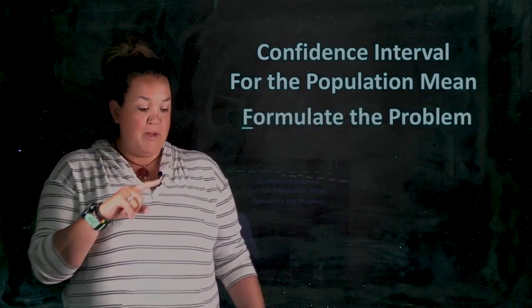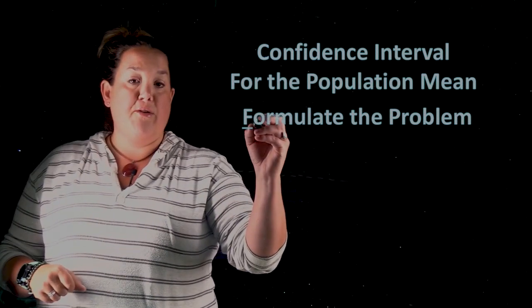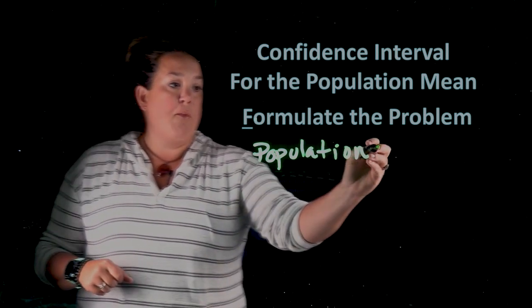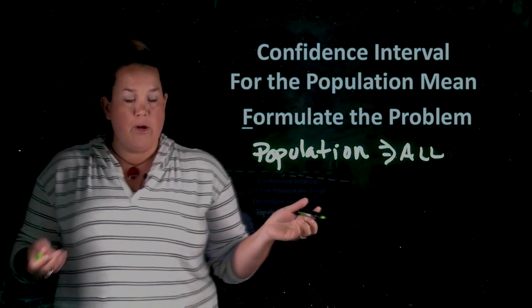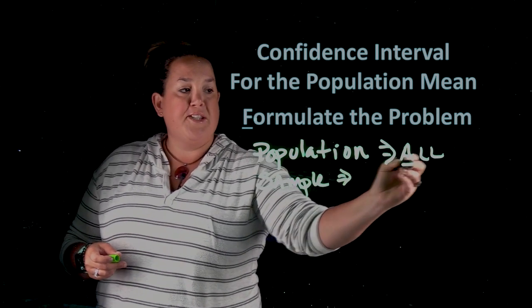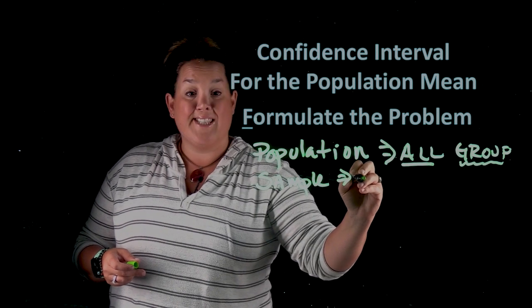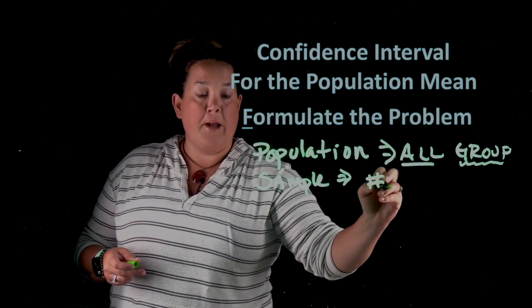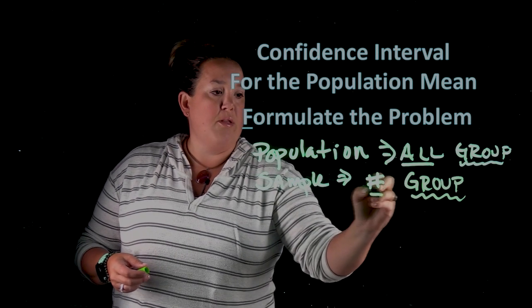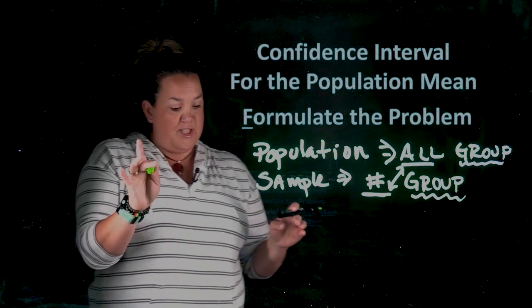For a confidence interval for the population mean, we're going to start by formulating the problem. That requires you to state first what the population is — the whole or entire group that you're interested in. Then you would state the sample, which will be the same type of group, but here with the sample you'll say the size — how many people, trees, or whatever it is you're studying. These are the only two things that change from the statement of the population to the statement of the sample.